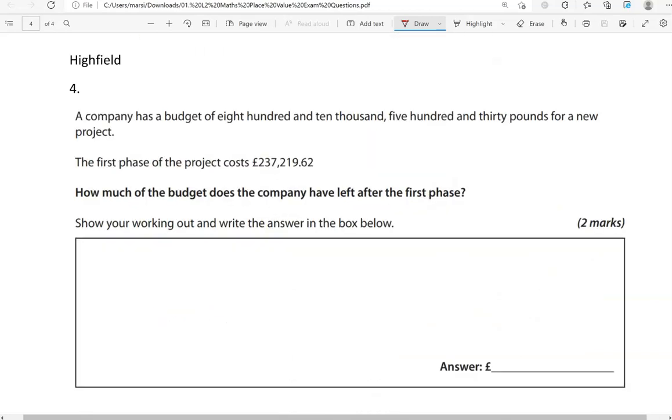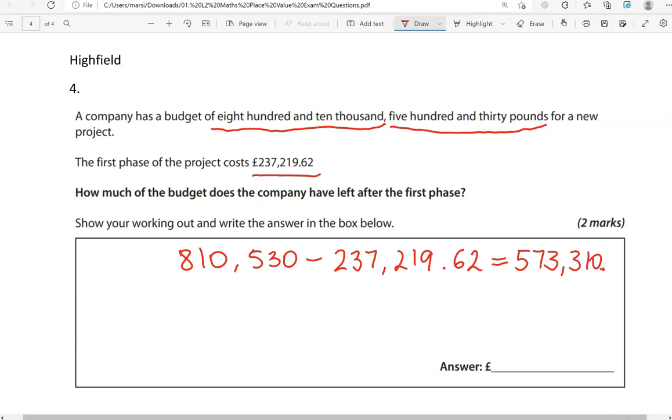A company has a budget of 810,530 pounds for a new project. The first phase of the project costs 237,219 pounds and 62 pence. How much of the budget does the company have left after the first phase? Show you working out and write the answer in the box below. So the budget is 810,530 pounds. And then they spend this amount in the first phase. So take away 237,219 pounds and 62 pence. So we do this in a calculator as it's a calculator paper.